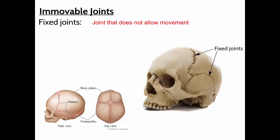Any questions about the bones or joints? We'll move on tomorrow and talk about some problems with the skeletal system and then muscles as well. And yes — gliding joints, for example, would be the vertebrae.